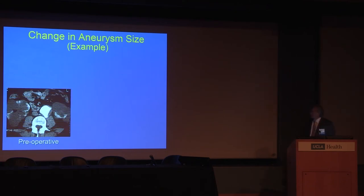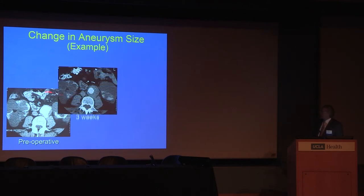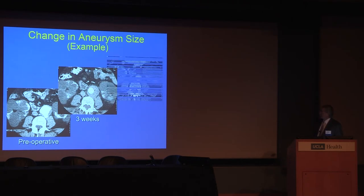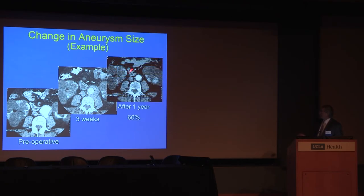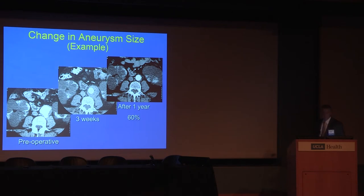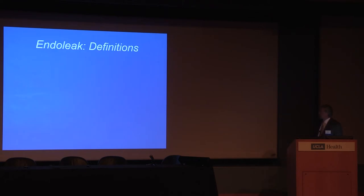What we like to see when we do an endovascular intervention is thrombosis of the aneurysm around the endograft and hopefully shrinkage of the aorta around the repair. This occurs in about 60% of cases. In about 30-35% of cases the aneurysm stays the same, but in about 5% of cases the aneurysm is going to enlarge.